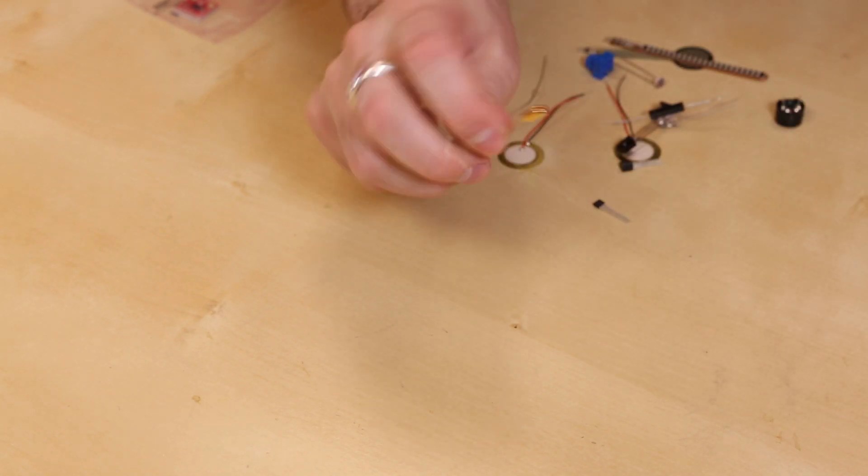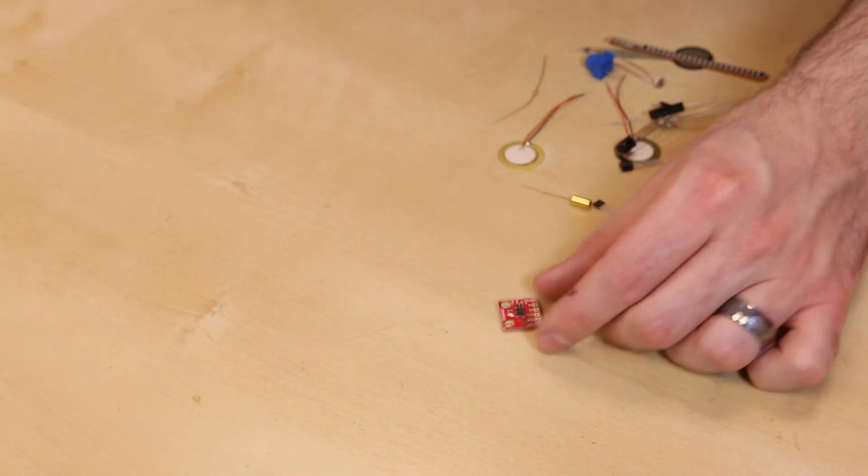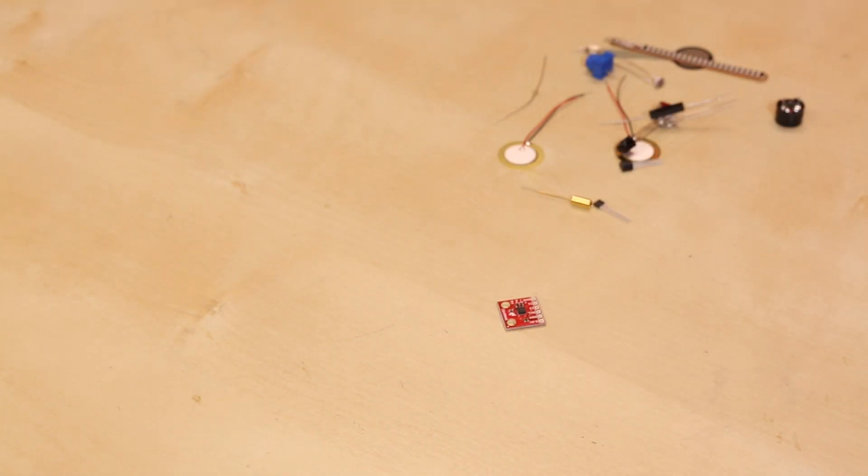And lastly, there is a tilt sensor, which just has a simple ball inside that when you tilt it over, it turns on. And there's also a three-axis accelerometer included.